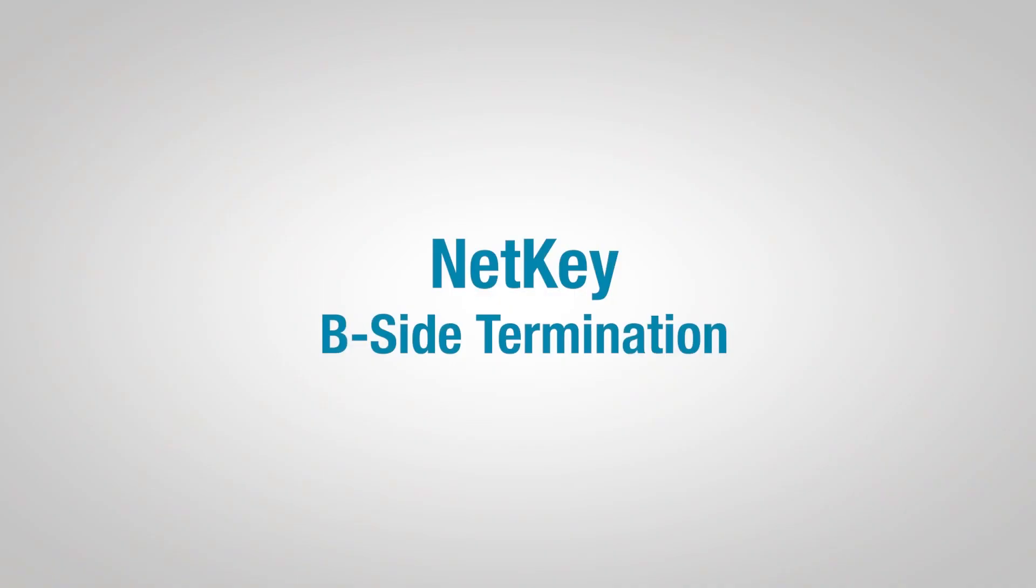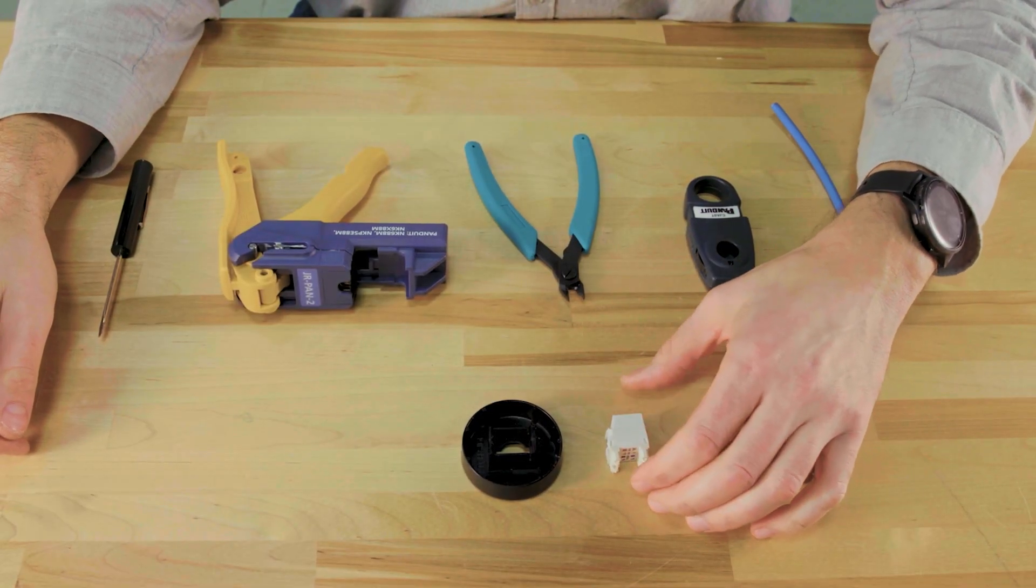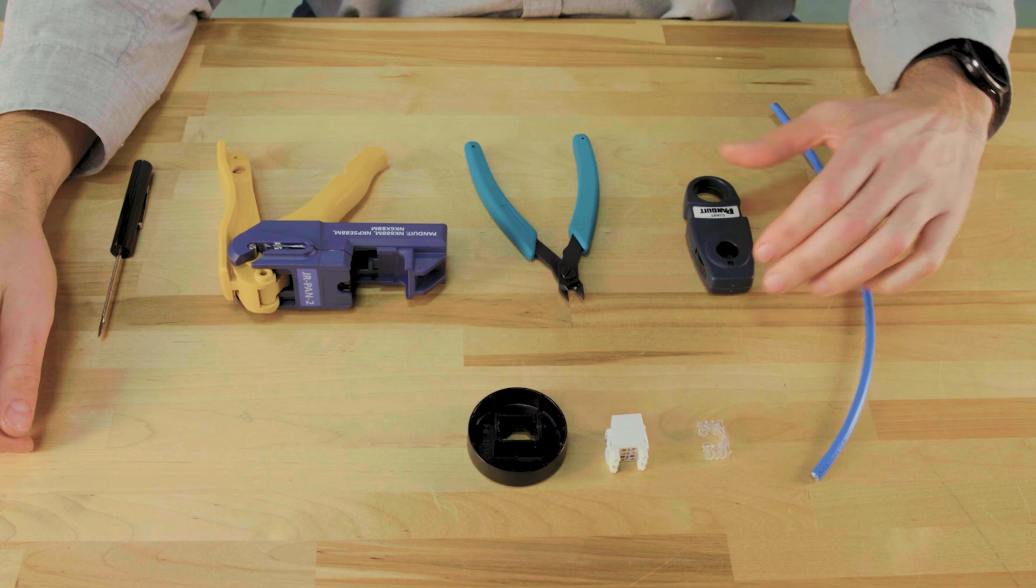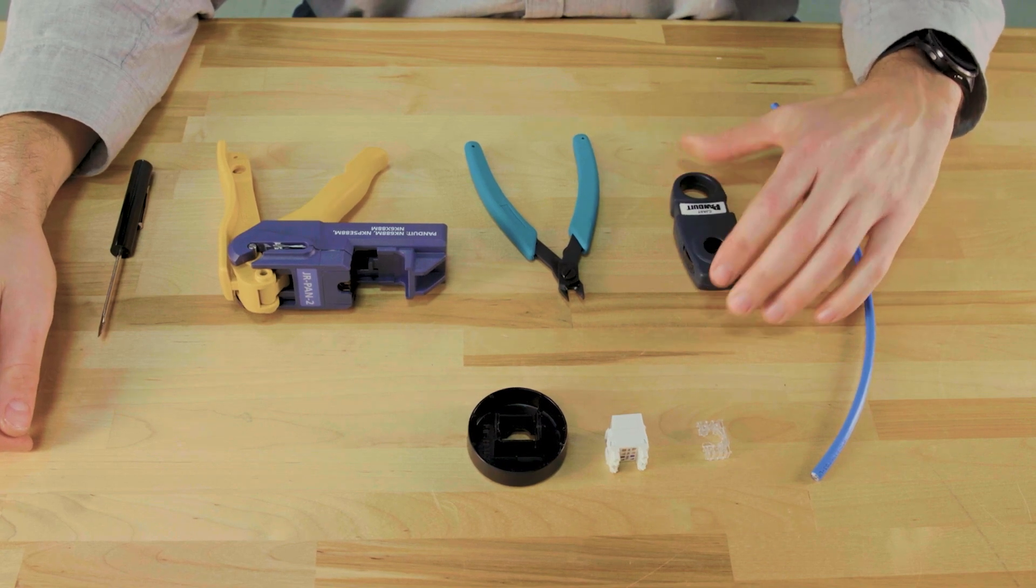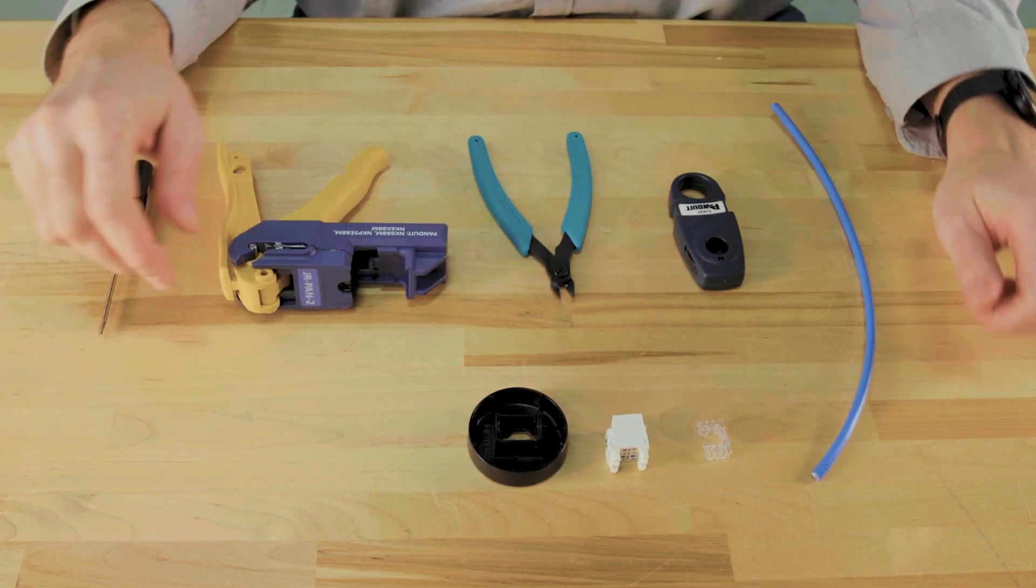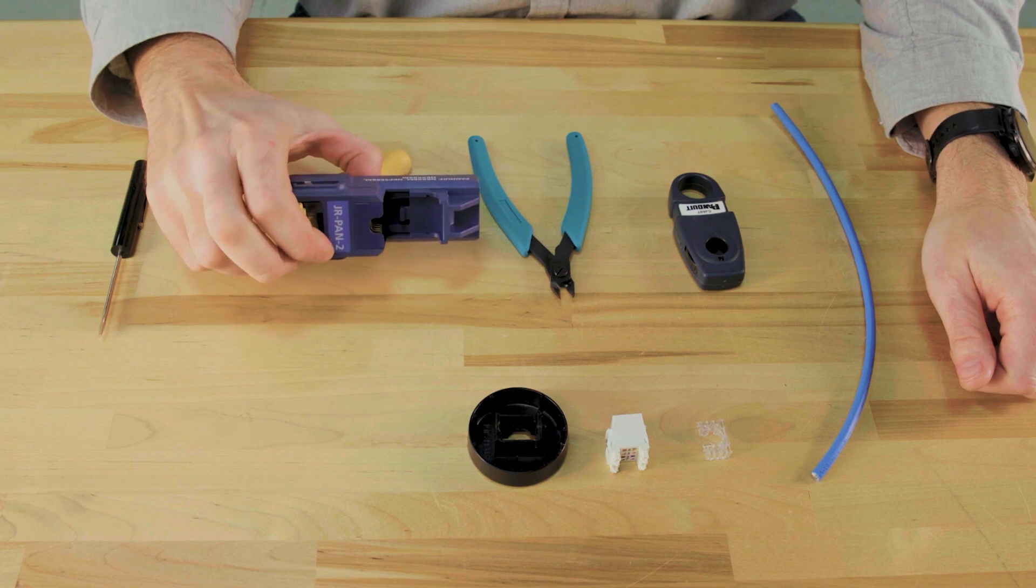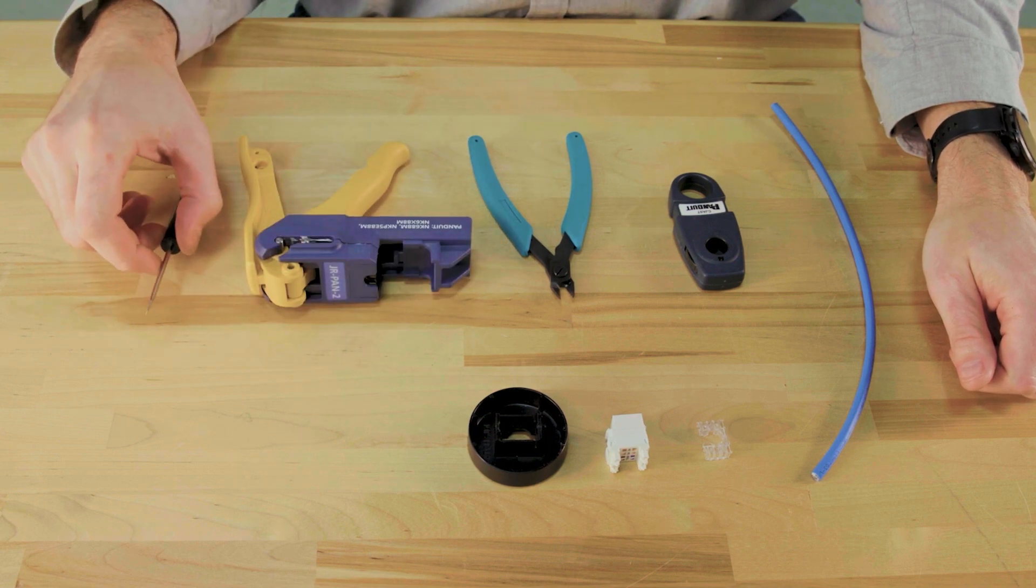Here's how to terminate a Panduit NetKey jack using B-side wiring. You'll need a Panduit termination base, a wire jacket stripper, a wire snipper, the jack rapid tool, and a flathead screwdriver.